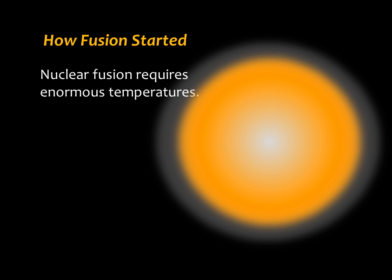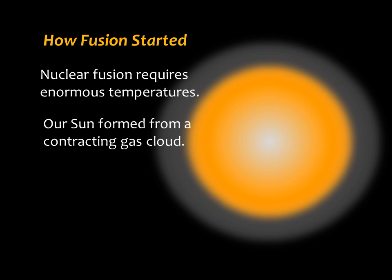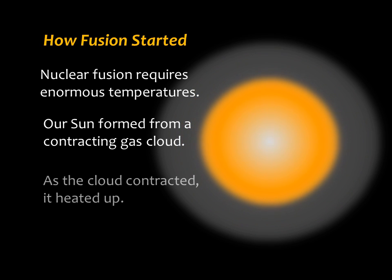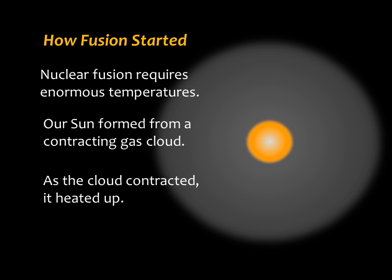Our sun formed about four and a half billion years ago from a collapsing cloud of interstellar gas. As this cloud collapsed, it became hotter and hotter. Eventually, temperatures in the core became hot enough to sustain nuclear fusion, and our sun officially became a star.